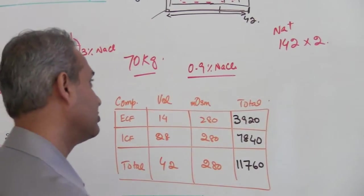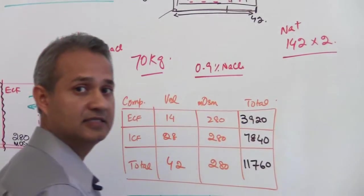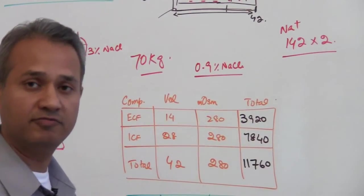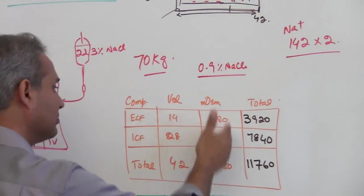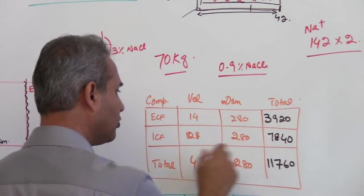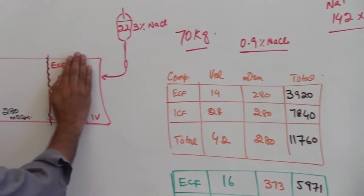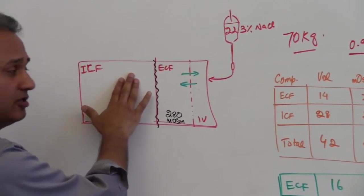But a good rule of thumb is to quickly double the value of the sodium osmolarity and that would give you the body osmolarity. So anyways coming back here, osmolarity is 280 in the extracellular fluid and in the intracellular fluid.